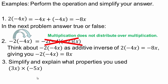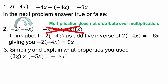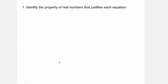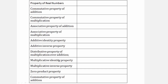Simplify 3 times negative 5 times x times x, and explain what properties you used. The answer is negative 15x squared, because x times x is x squared. Using the associative and commutative property of multiplication, we can multiply the x's first, and then 3 times negative 5 — which is negative 5 plus negative 5 plus negative 5 — gives negative 15. Now identify the properties of real numbers that justify equations from our property list: commutative property of addition, commutative property of multiplication, zero product property, and so on.